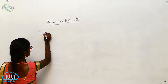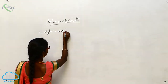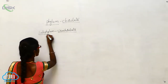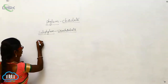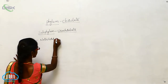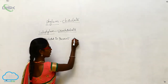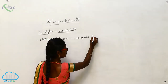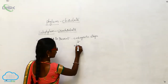Subphylum Urochordata. In this Urochordata, the notochord is present at the embryonic stage. It will disappear at the adult stage.